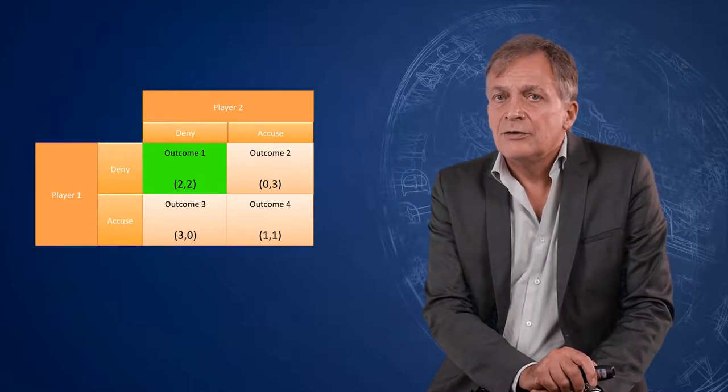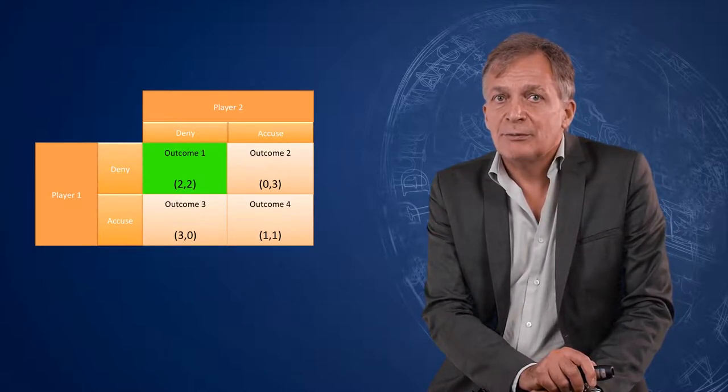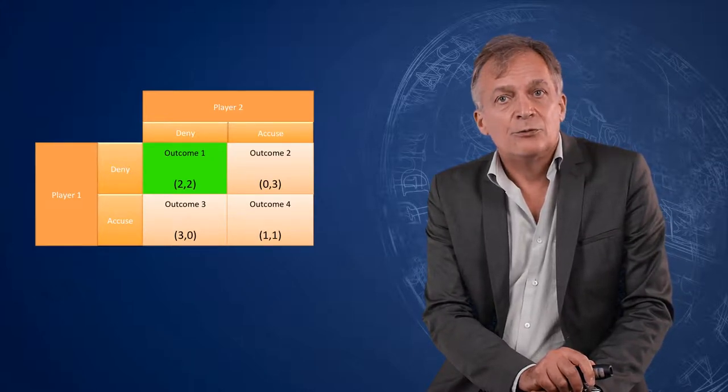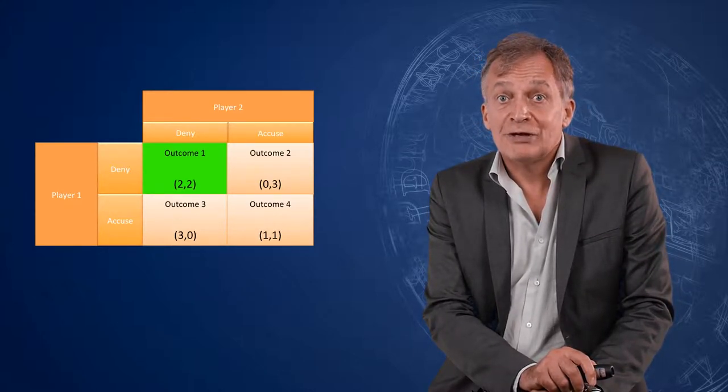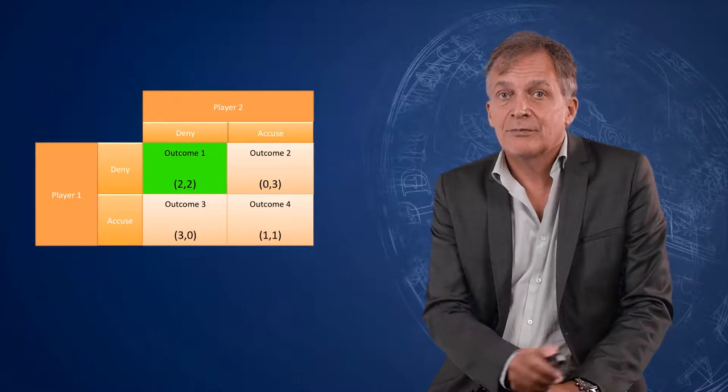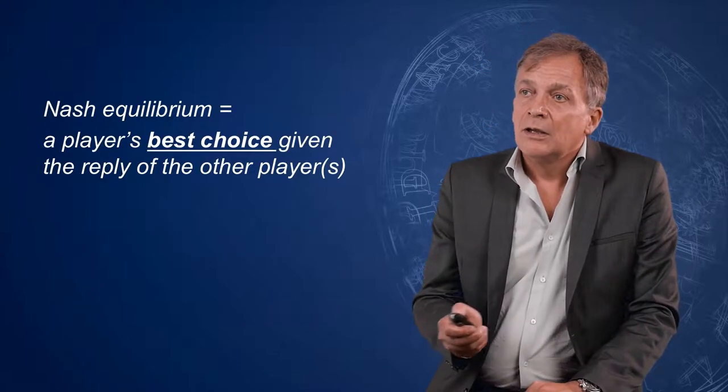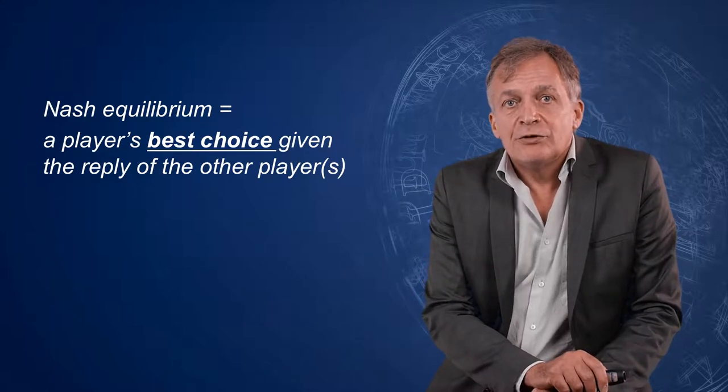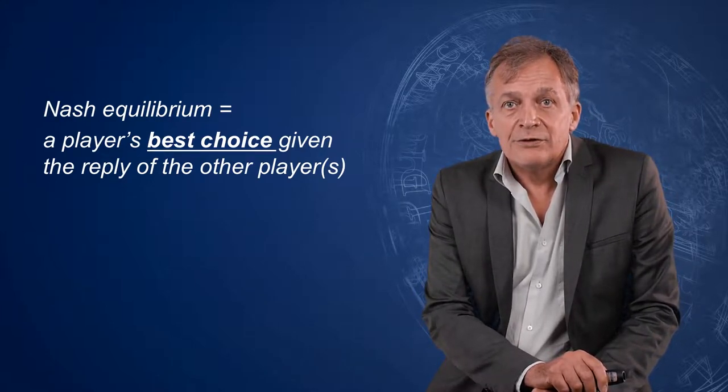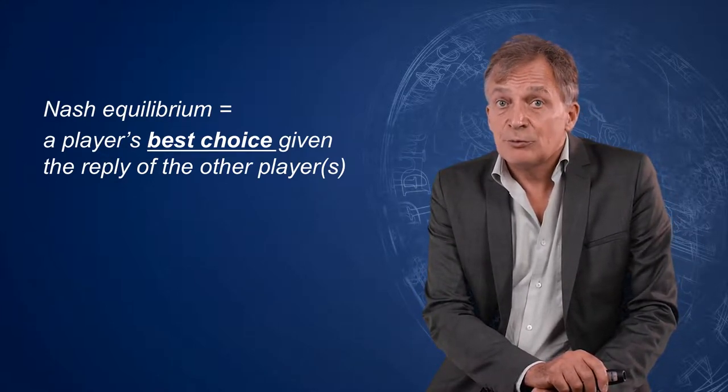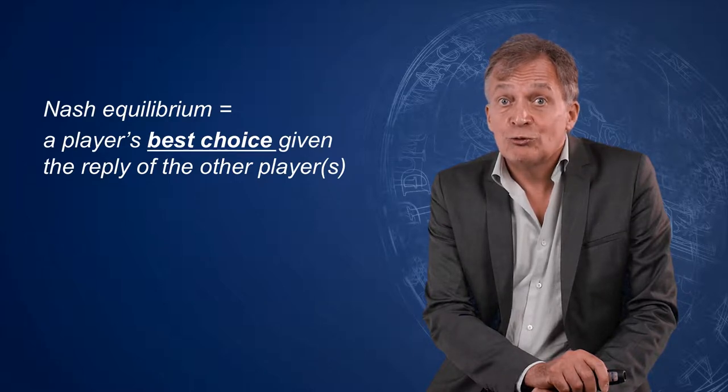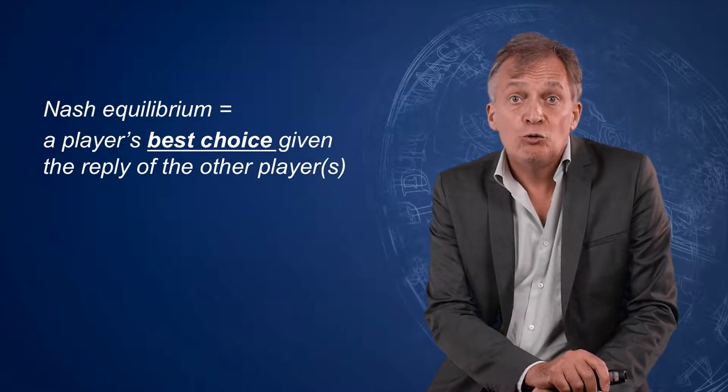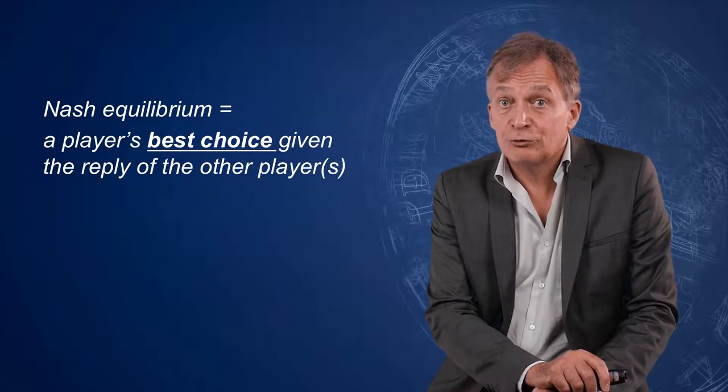However, this optimum is not the equilibrium in behavior. To find this equilibrium, we make use of the so-called Nash equilibrium concept. This concept indicates that equilibrium exists when each player makes his or her best choice given the choice of the other player. In other words, in equilibrium, none of the players wants to change his or her choice.